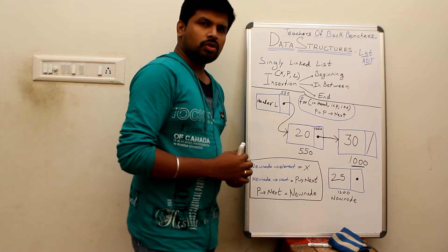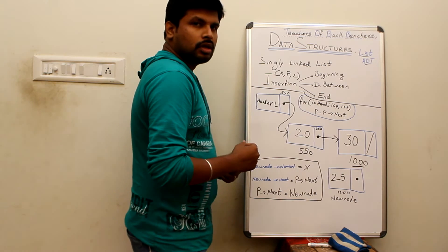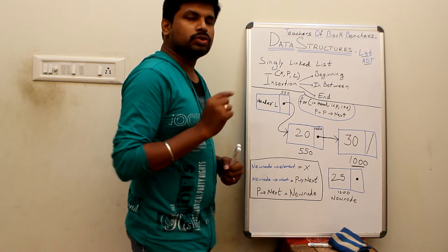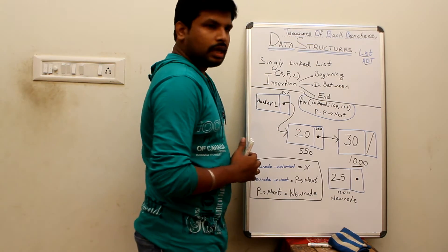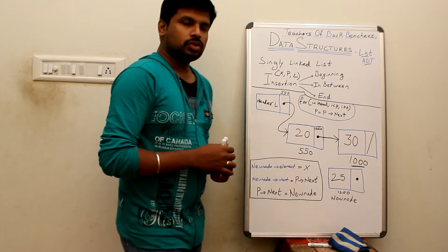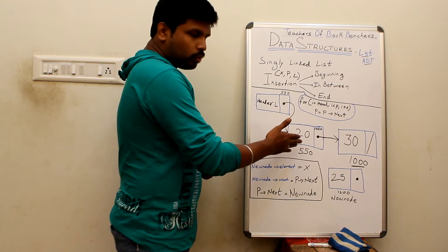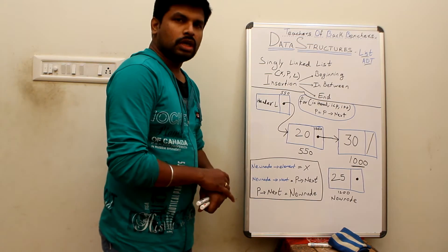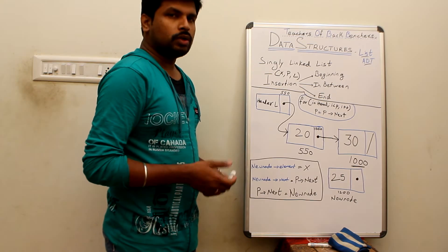The first node consists of the value 20 and its next address is 1000. So we look at memory address 1000, which holds the value 30, and there is no next address, indicating the end of the list. Our linked list starts from head, moves through 20, and ends at 30. This is our given list.